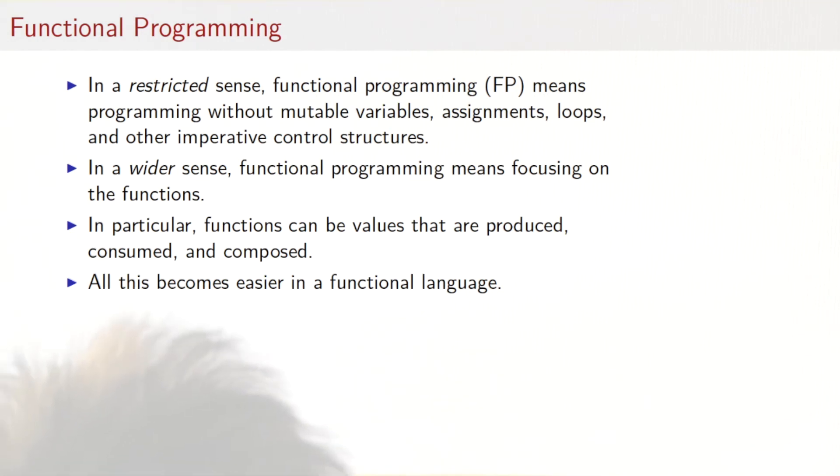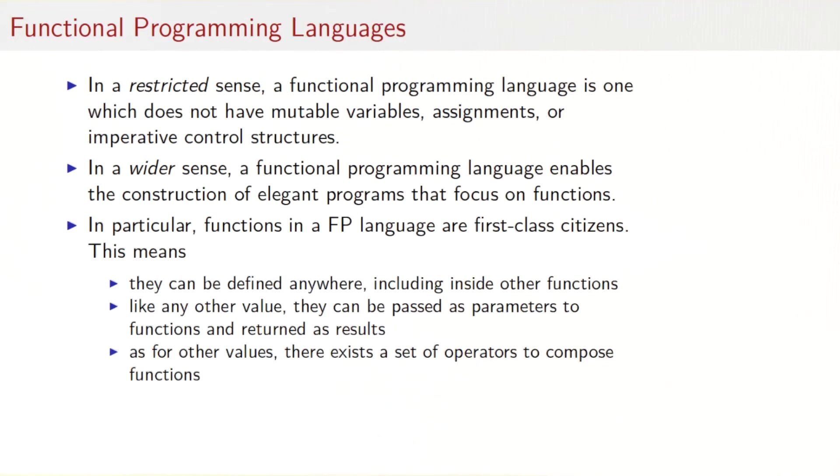In fact, there are two ways to look at functional programming, a restricted one and a more general one. In the restricted sense, functional programming just means programming without mutable variables, without assignments to those variables, without loops and the other imperative control structures. In the more general sense, functional programming means focusing on the functions in the program. It gives you new capabilities to work with these functions. Particular functions can be values that are produced, consumed and composed. All this can be done in any programming language, but it becomes much easier in a functional language. Then we can also look at functional languages in a restricted sense or in a more general sense. In the restricted sense, a functional programming language is one which does not have any mutable variables, assignments, or imperative control structures.